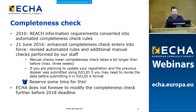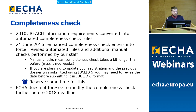Since 2010, ECHA translated the REACH requirements into automated completeness check rules, and for six years it remained basically unchanged. Over this time, ECHA collected experience on how well the completeness check implementation served its purpose. Based on these experiences, from the 21st of June 2016, an enhanced completeness check entered into force, which contains revised automated rules as well as additional manual checks performed by our staff. These manual checks mean that the completeness check can take a little bit longer than before, but not more than three weeks. If you are planning to update your registration and the previous dossier was submitted using IUCLID 5, you may need to revise the data before submitting it in IUCLID 6 form.